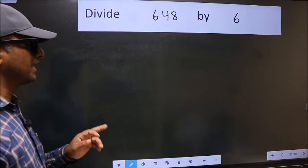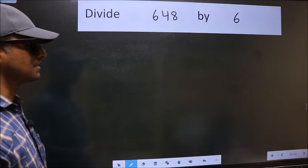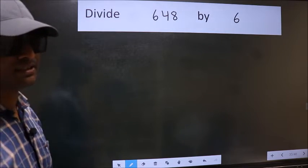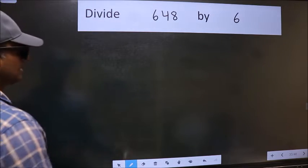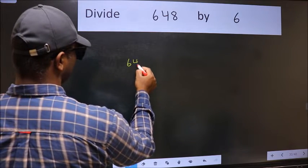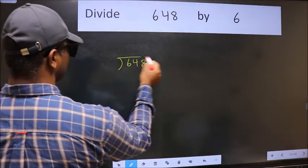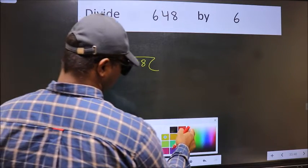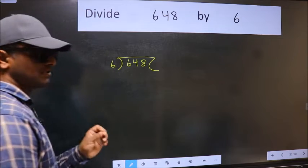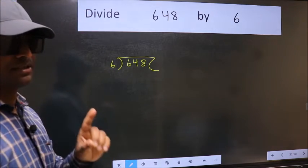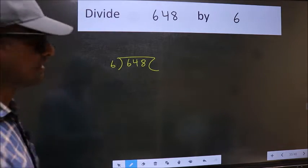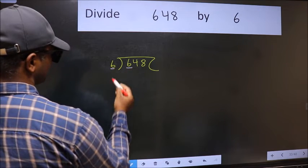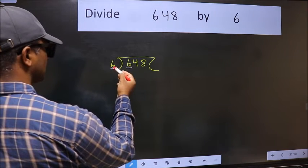Divide 648 by 6. To do this division, we should frame it with 648 here and 6 here. This is your Step 1. Next, here we have 6 and 6 — when do we get 6 in 6 table?